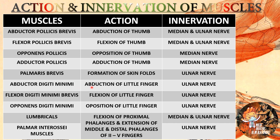Abductor digiti minimi action is abduction of little finger, innervated by ulnar nerve. Flexor digiti minimi brevis action is flexion of little finger, innervated by ulnar nerve. Opponens digiti minimi action is opposition of little finger, innervated by ulnar nerve. Lumbrical muscles action is flexion of proximal phalanges and extension of middle and distal phalanges of second to fifth fingers, innervated by median and ulnar nerve. Palmar interossei action is flexion of proximal phalanges and extension of middle and distal phalanges of second to fifth fingers, innervated by ulnar nerve.